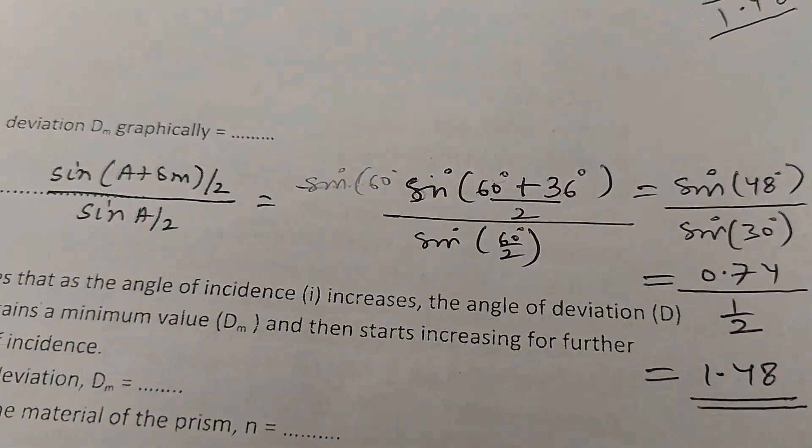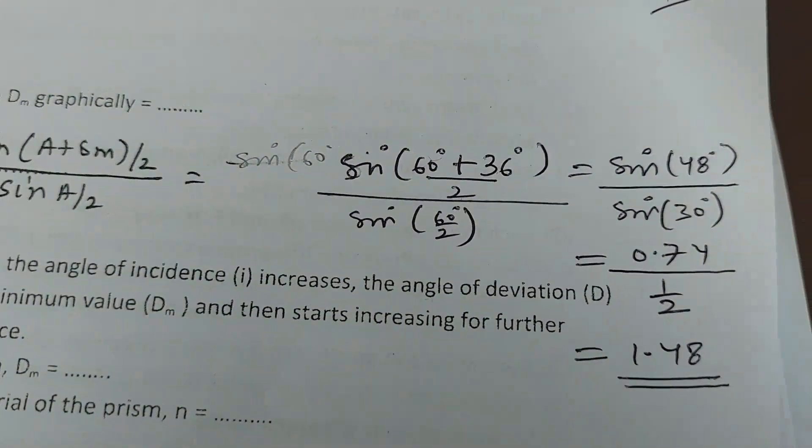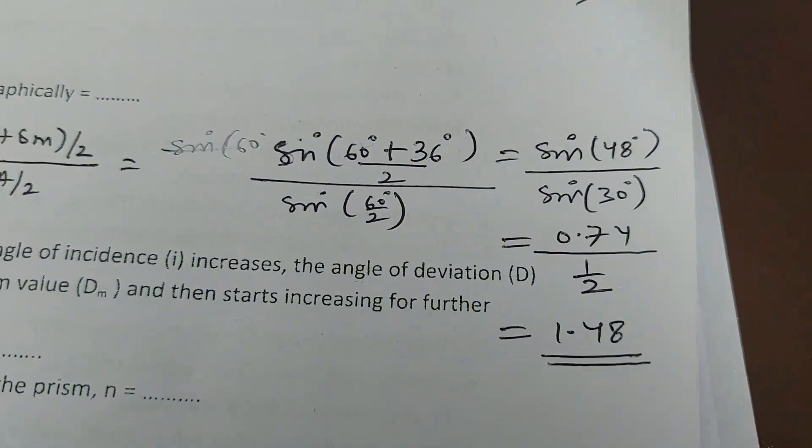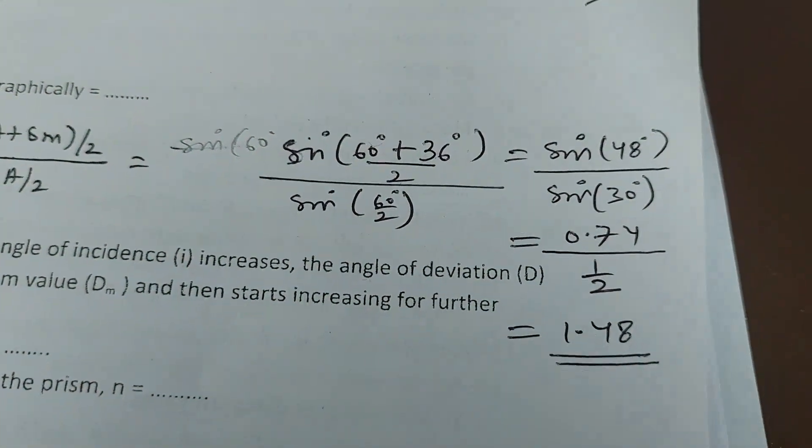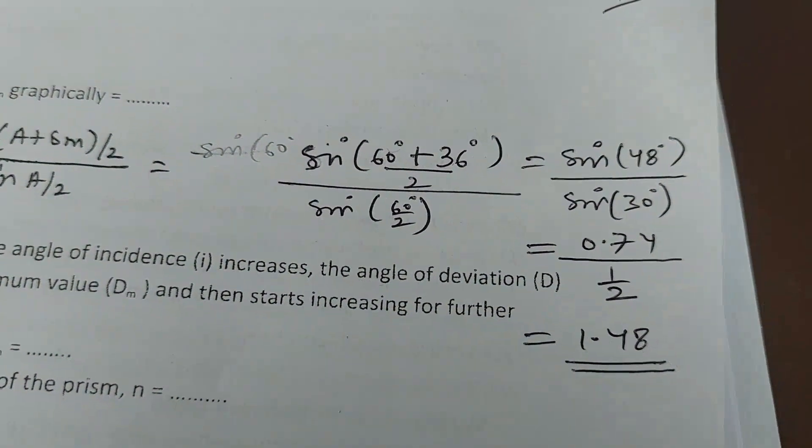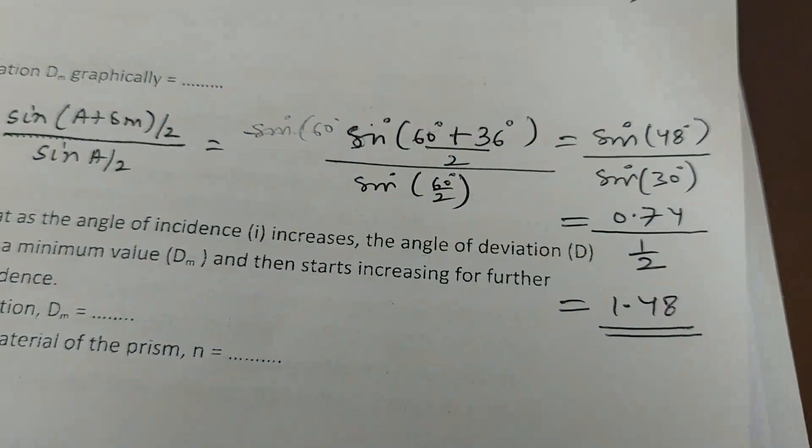It becomes sin 48 upon sin 30. The value of sin 48, you can see from the standard log tables. There are pages for the angles. Use that sin table value, natural signs.